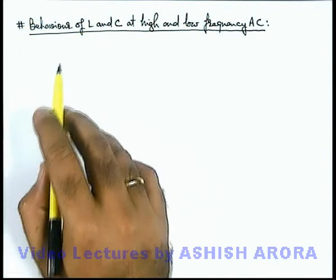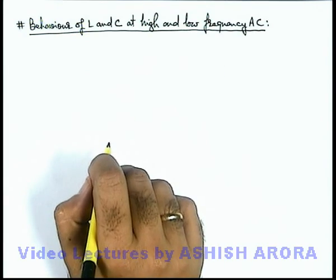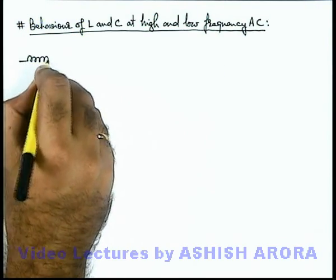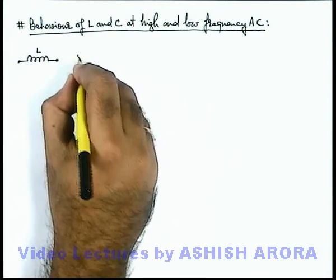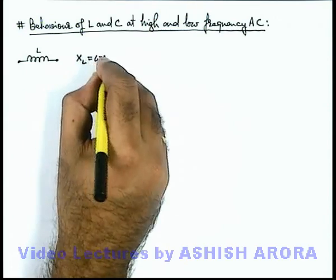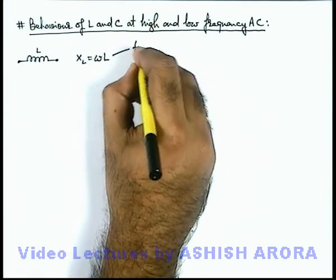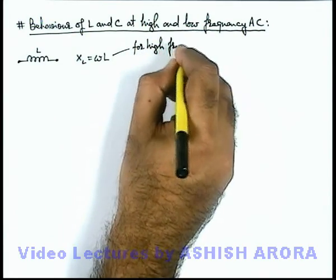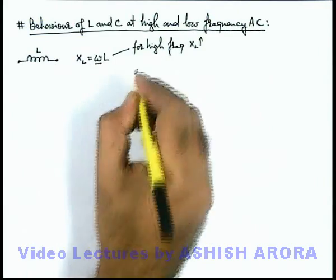Let us discuss the behavior of L and C at high and low frequency alternating current. We will talk about an inductor first. For an inductor, its ohmic opposition is inductive reactance, written as X-L, which equals omega L. For high frequency, the value of X-L will be high because it is proportional to omega.